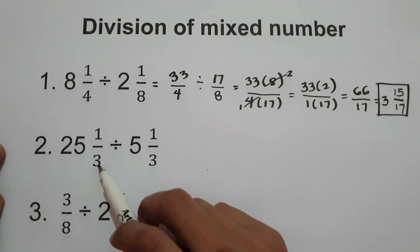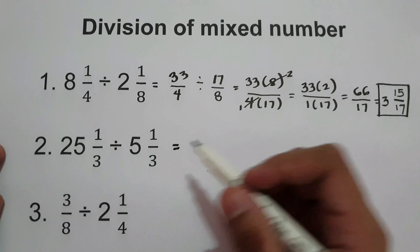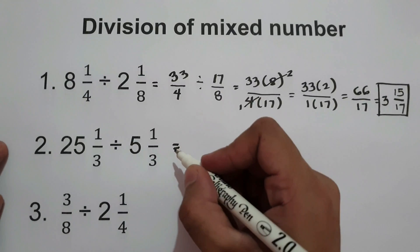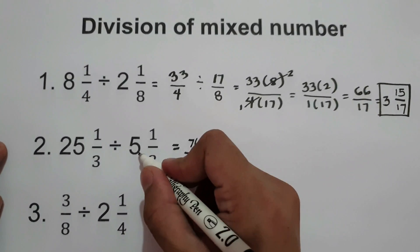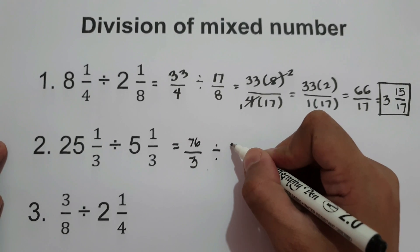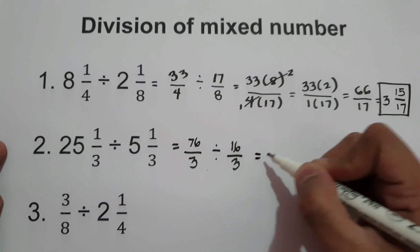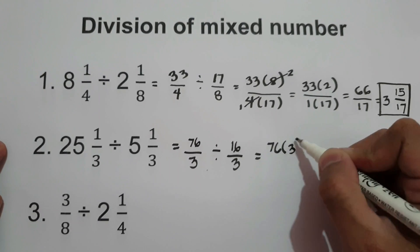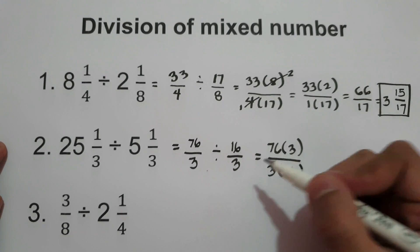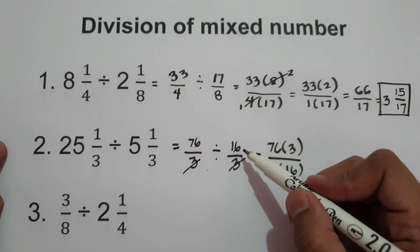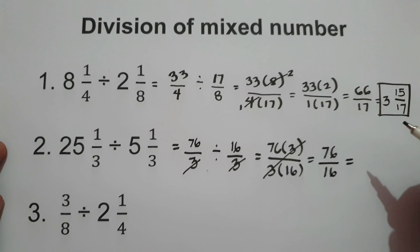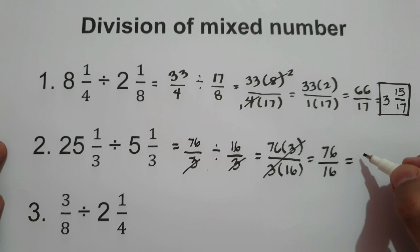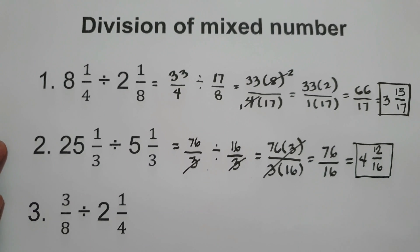What about number 2? We have 25 and 1/3 divided by 5 and 1/3. Let's change both to improper fractions. 25 and 1/3 becomes 76/3 (since 3 times 25 is 75, plus 1 is 76). Divided by 5 and 1/3, which becomes 16/3 (since 3 times 5 is 15, plus 1 is 16). Cross multiplying: 76 times 3 over 3 times 16. We can cancel both 3s, leaving 76 over 16, which equals 4 and 12/16. That is our final answer, or you can simplify 12/16 further.